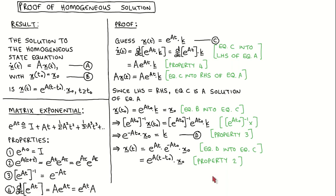With the matrix exponential properties in hand, let's now prove the solution to the homogeneous state equation. The idea of the proof is very similar to solving a scalar linear differential equation: we guess a solution, we check whether our guess is in fact a solution, and we use the initial conditions to solve for the unknown constants. We start with the guess that the solution to the homogeneous equation is given by x equal to the matrix exponential of At times a constant vector k.